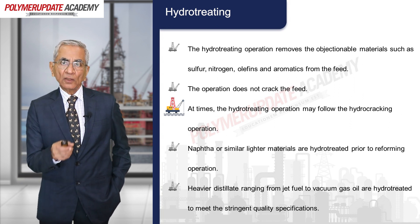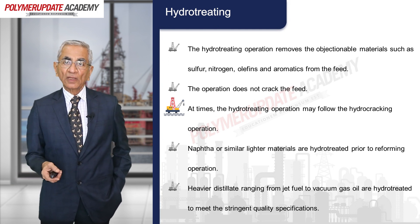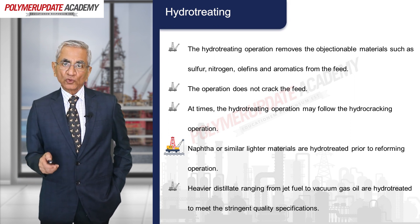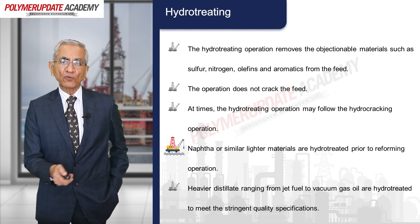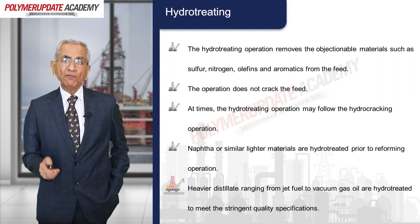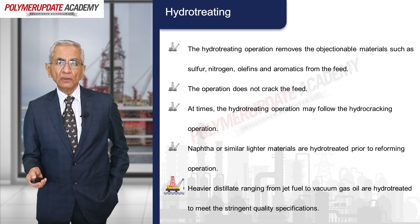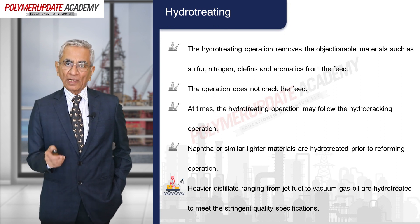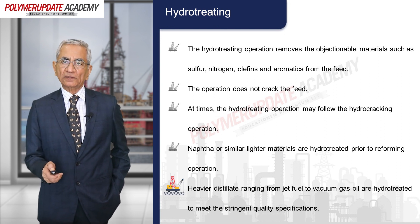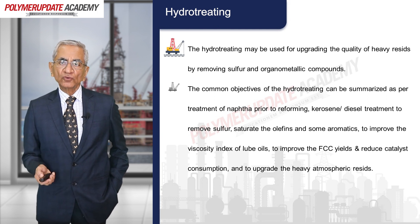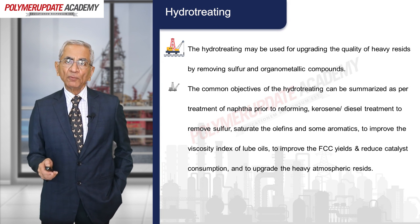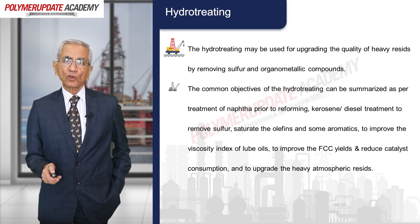At times the hydrotreating operation may follow the hydrocracking operation, where you already crack the material in the presence of hydrogen. Naphtha or similar lighter materials are hydrotreated prior to reforming operations so that the feed going to reforming is free from impurities. Heavier distillates ranging from jet fuel to vacuum gas oil are hydrotreated to meet stringent quality specifications.